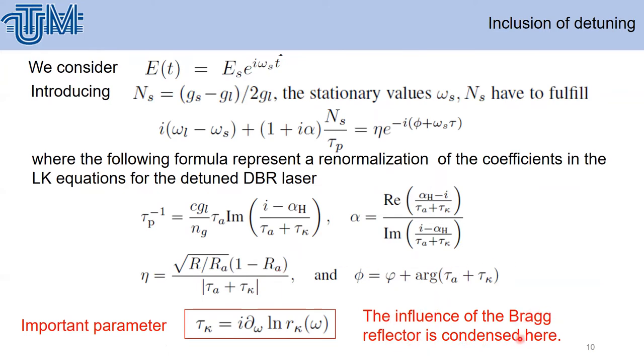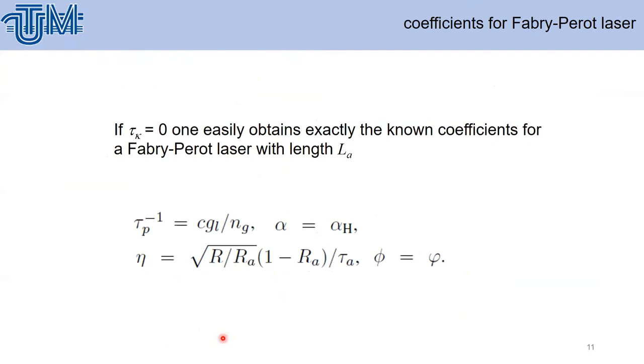Here are the values for these parameters. The influence of the Bragg reflector is considered in this parameter tau with kappa. If tau kappa equals zero, one can easily obtain exactly the known coefficients for a Fabry-Perot laser, because these formulas are well known before we published this paper.